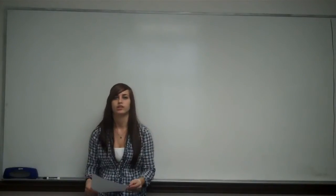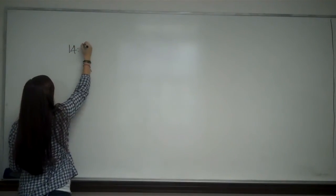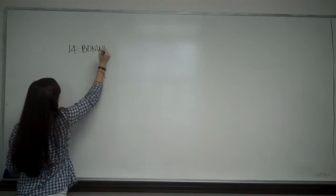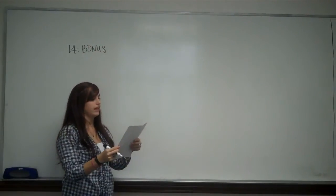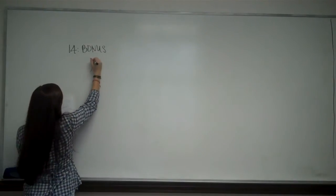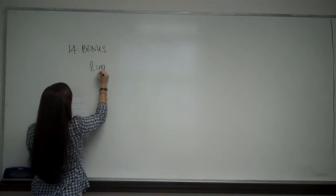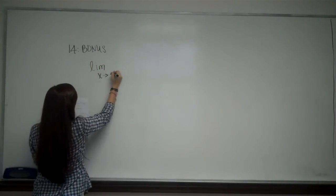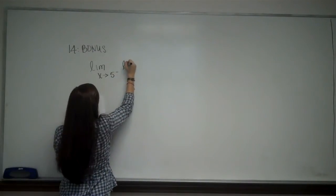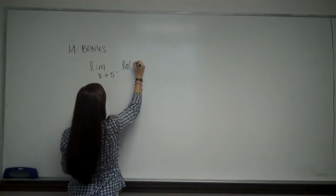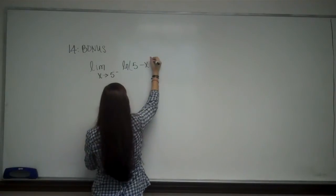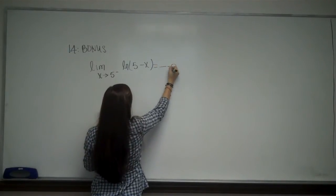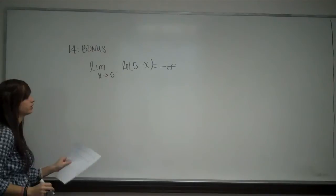Problem number 14, which is a bonus problem. So 14 asks us another limit problem: to find the limit as x approaches 5 from the left of the natural log of 5 minus x equals negative infinity. And it wants to know whether it's true or false.